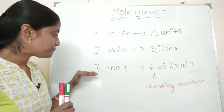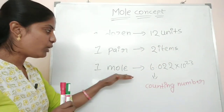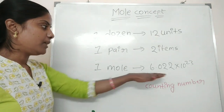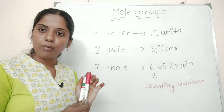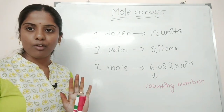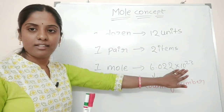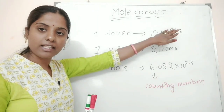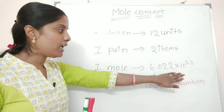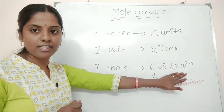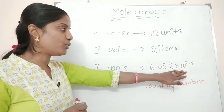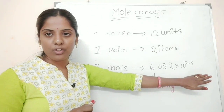In other words, one mole means anything — it may be anything, whatever. There is no restriction on the type of entity. The dozen is like moles in that sense. It is 6.022 × 10²³.